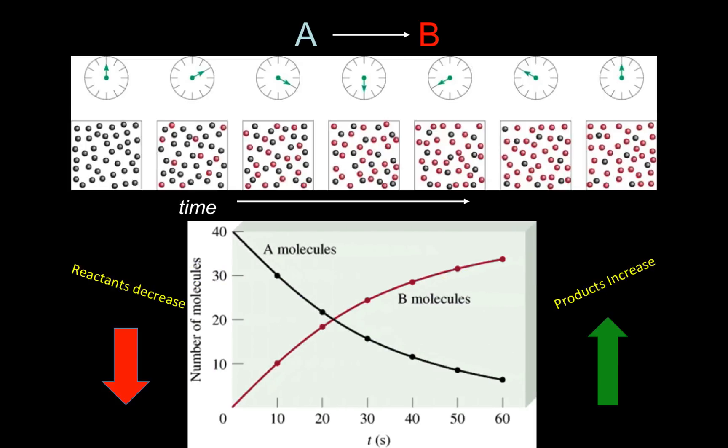This graph represents the change in concentration of A and B over time. It would be good to draw this graph into your composition notebook.